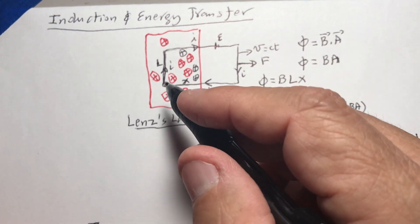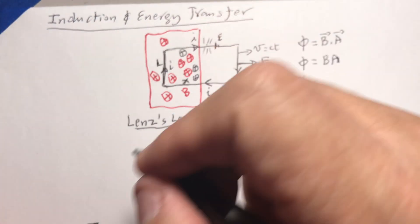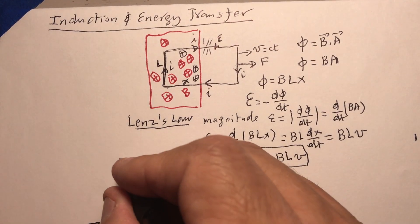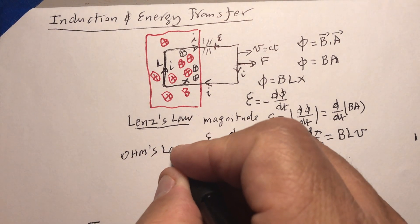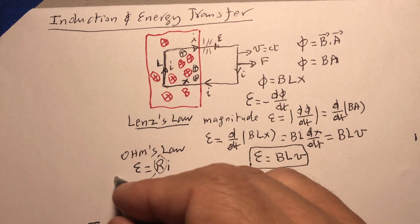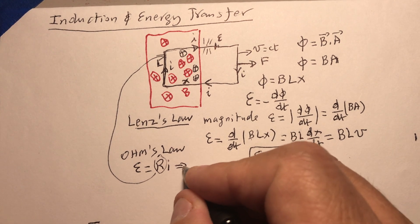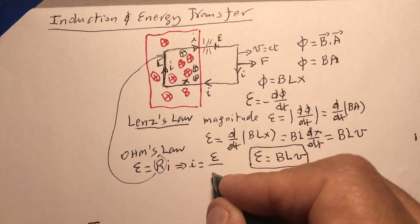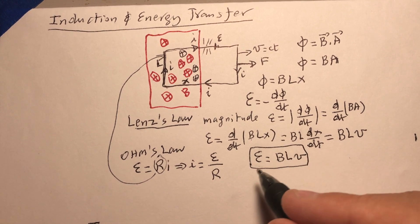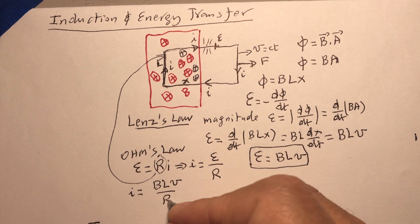With a current flowing, energy is radiated as power. Using Ohm's law, E = RI, the current I equals EMF over R, which gives us I = BLV/R. If we know the B field, the length L, the velocity V, and the resistance R, we can find the current. The current depends on velocity — pull fast and the current is high; pull slowly and it's small.